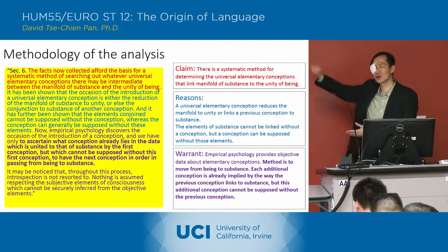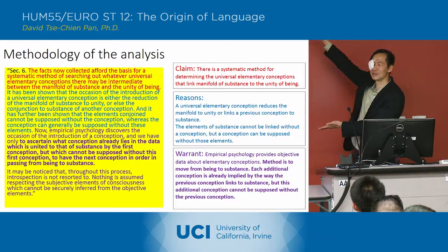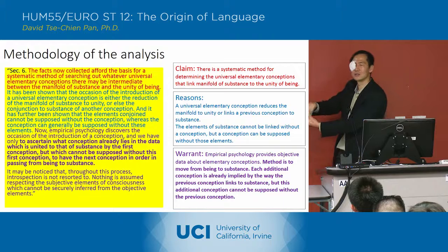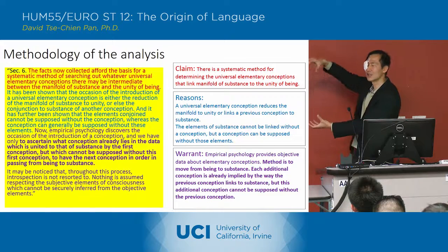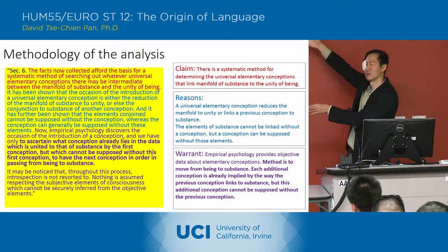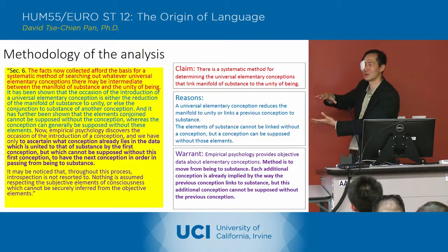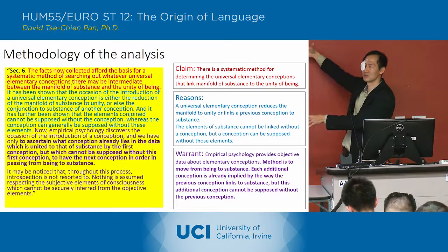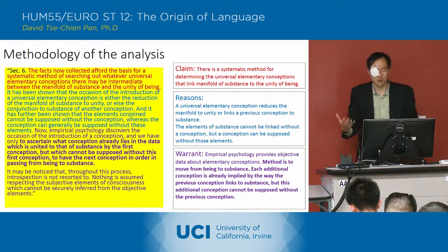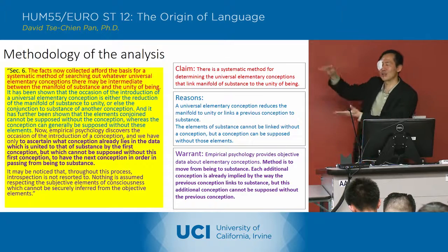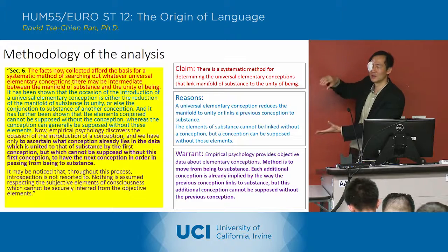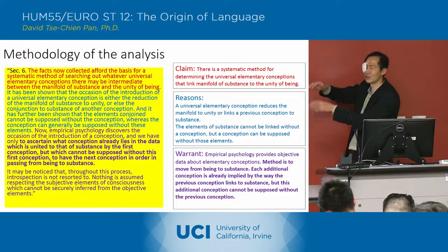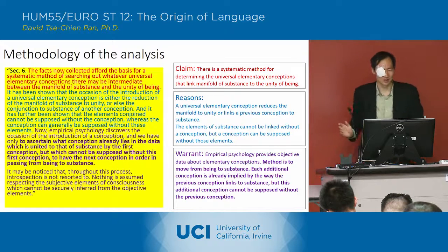If you imagine that chart again with being on the bottom and substance on the top, either you've got some conception that creates the unity of being, or you've got another conception that links that conception up to the substance. He's saying there are two kinds of conceptions: one conception creates the unity, another conception links that unity to the substance.